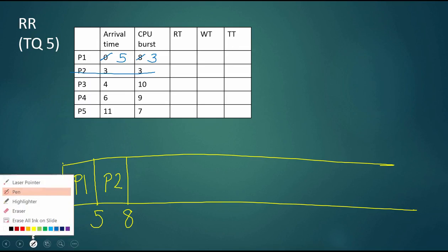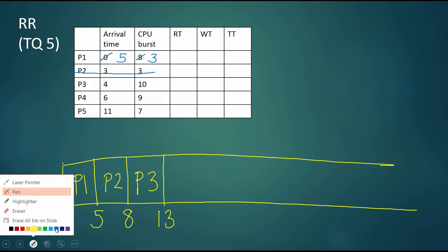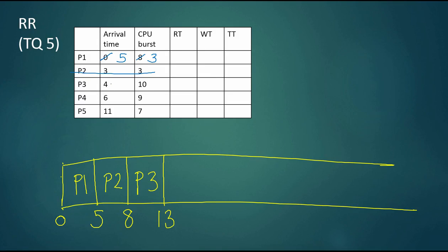The current time is eight, and the next one to arrive in the ready queue, looking at arrival times, is P3. P3 has a CPU burst of 10, so it will go until time 13, then be preempted and go back into the ready queue at time 13 with five time units of CPU burst left.